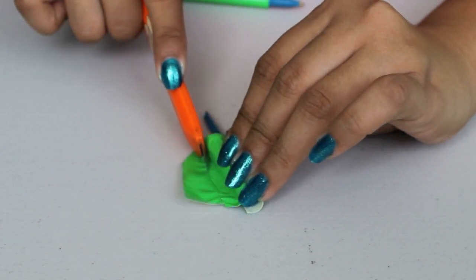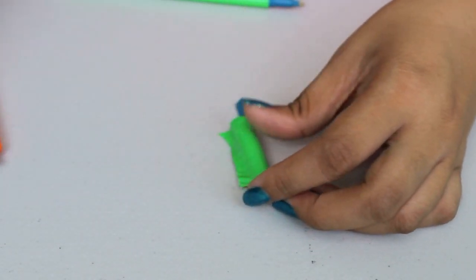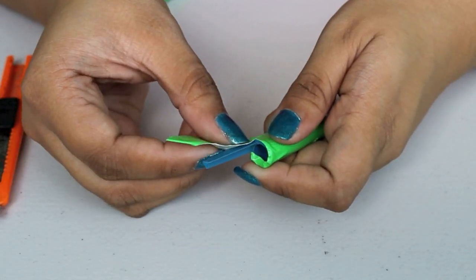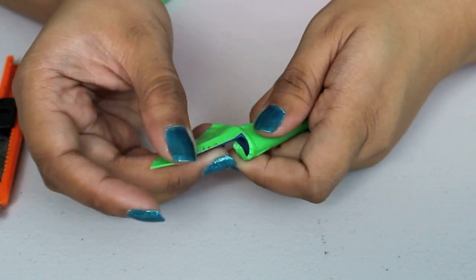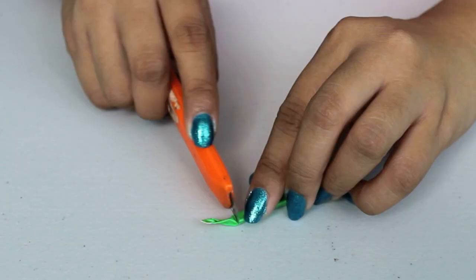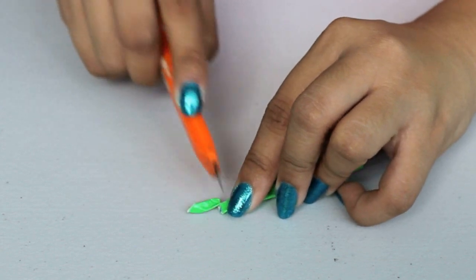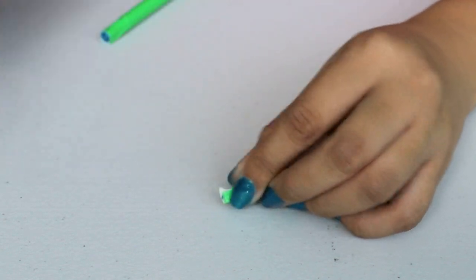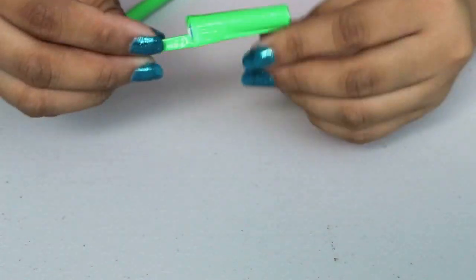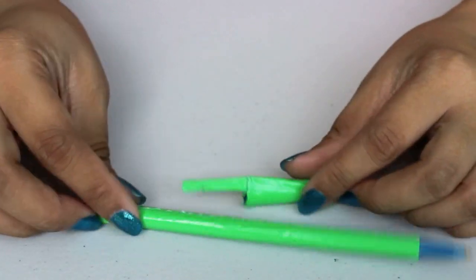I'm cutting off any excess tape and using that to cover the rest of the pen. You can choose whatever color duct tape to cover your pen. Here I'm just using green so it looks like a flower stem.